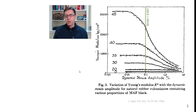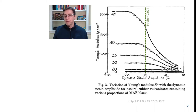Looking at the experimental data for rubber — this figure is from the original Payne paper — you can see Young's modulus on the y-axis and strain amplitude on the x-axis. The storage modulus is initially constant but then drops very quickly as strain amplitude increases. The green line is at about 0.001 strain, which is 0.1% strain. Rubbers with more fillers show a stronger and faster drop in storage modulus, and this is what's called the Payne effect.